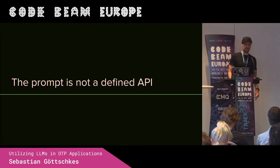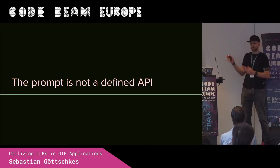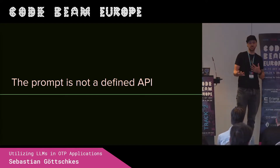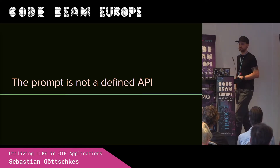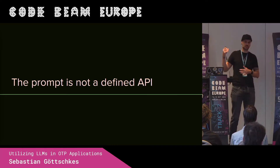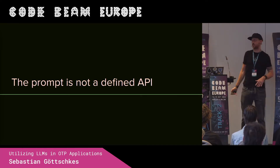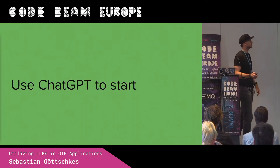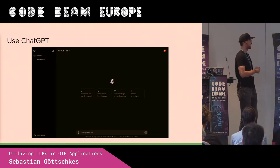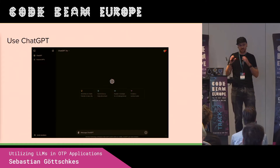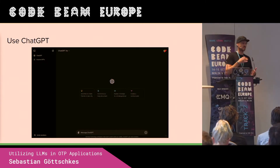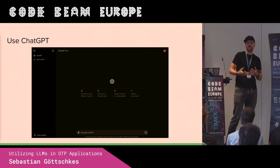Imagine your boss comes to you and says they want to add an LLM for a certain feature. You first need to figure out what you actually need to input into the LLM to get back what you expect. You can use ChatGPT or Claude to start — just try different prompts and see what comes back as a first test. Is this even feasible? Maybe you don't get back the results you expected, maybe the quality is not good, and then you need to iterate. If you don't find a path where it's working, this might not be a good use case for an LLM.